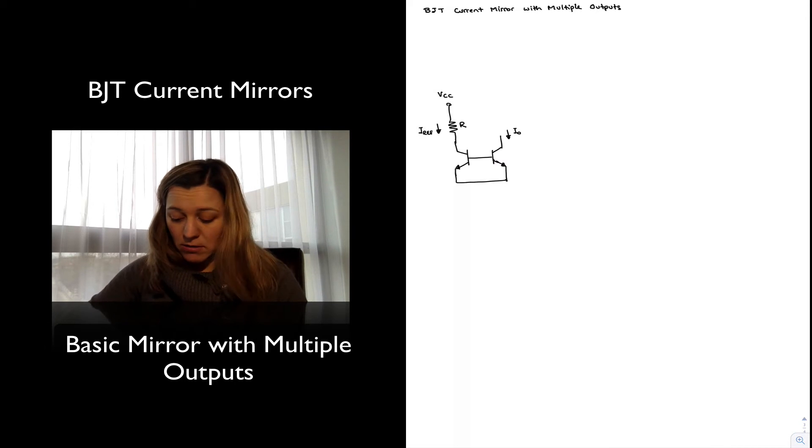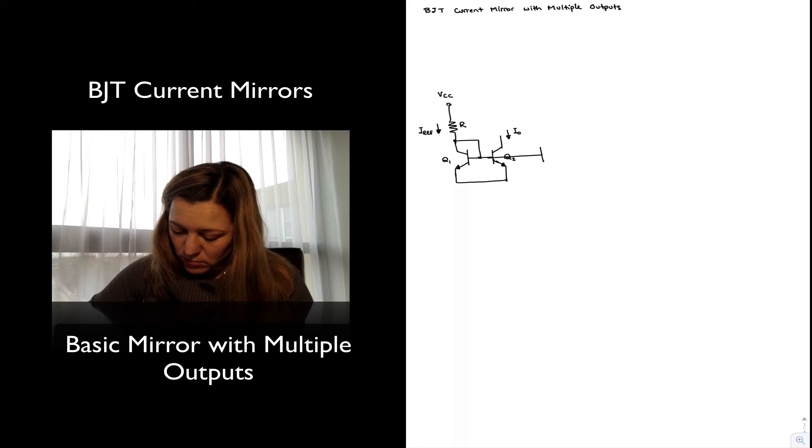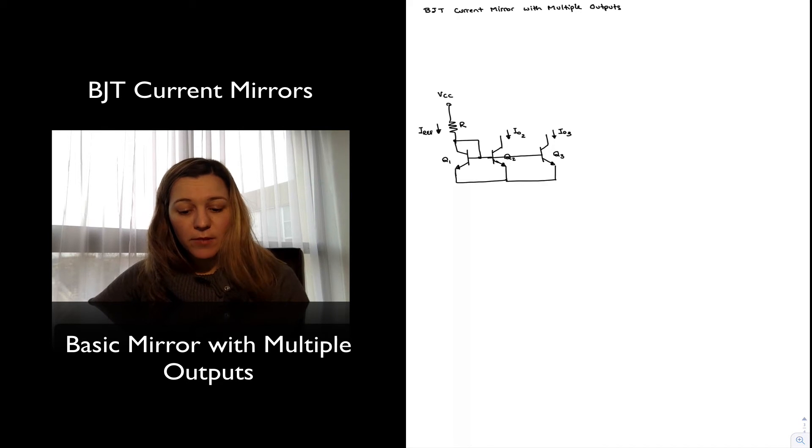Now I could connect, oops, I'm forgetting my diode connection. Now I could connect the base of transistor Q1 to yet another transistor in order to generate a second current. So I'm going to call this Iout2, and this, if this is Q3, this will be Iout3, et cetera.